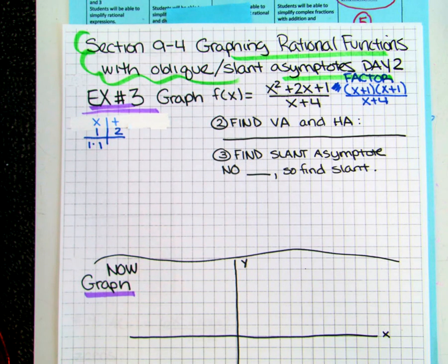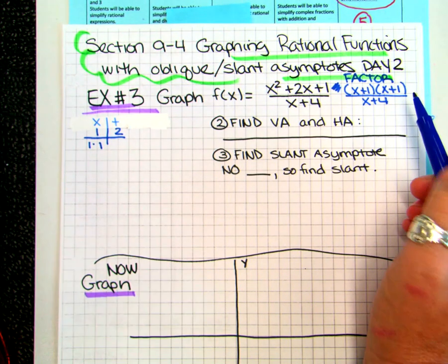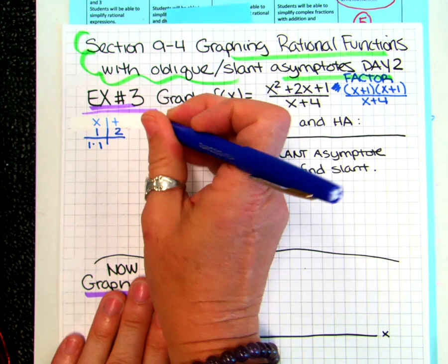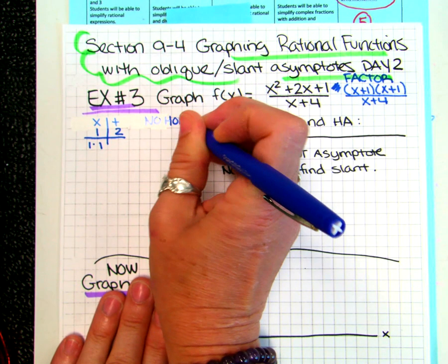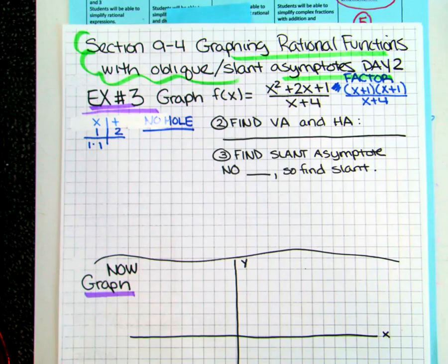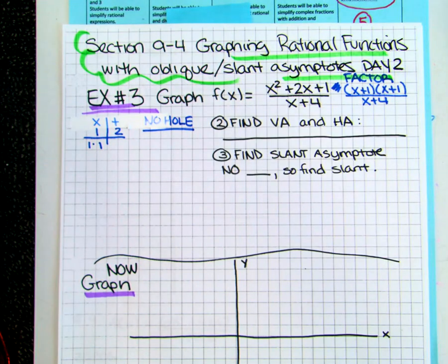Does anything cross out? No — that's the new part of the lesson. When we look at this today, nothing is canceling. So what does that mean? I have no holes in the graph. Yesterday we learned about holes — if they cancel, there's a hole. This one has no hole. Let's check for the VAs and HAs.